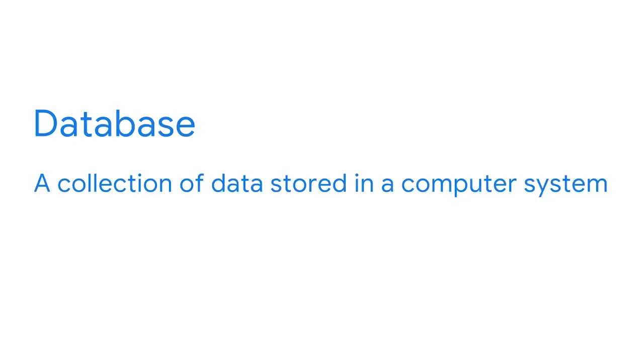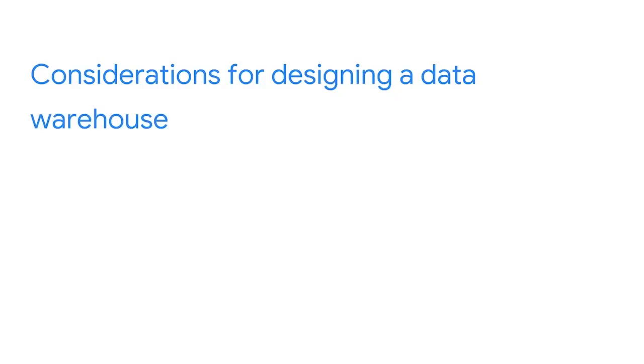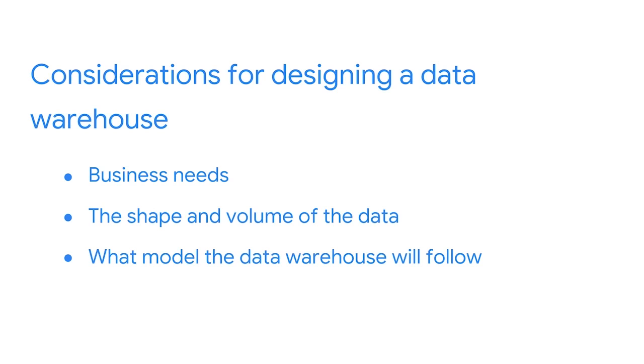You've been investigating data modeling and database schemas, as well as how different types of databases are used in BI. Now we're going to explore how these concepts can be used to design data warehouses. A data warehouse is a specific type of database that consolidates data from multiple source systems for data consistency, accuracy, and efficient access, and is used to support data-driven decision-making. When it comes to designing a data warehouse, a BI professional will consider business needs, the shape and volume of the data, and what model the data warehouse will follow.